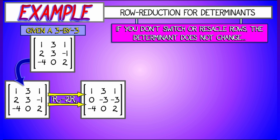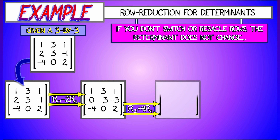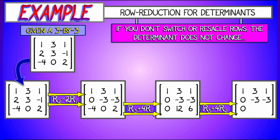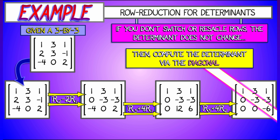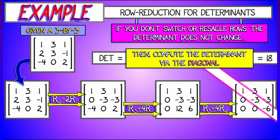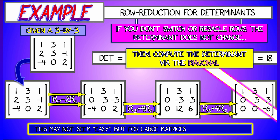I've got a pivot in the upper left-hand corner, so I can subtract twice row 1 from row 2, and then add 4 times row 1 to row 3 to clear out the first column under the pivot. Then all I have to do is add 4 times row 2 to row 3 to get an upper triangular matrix. Now I just multiply those diagonal terms together. Since I never did a row exchange or row rescaling, the determinant has not changed. The determinant of this matrix is 18.